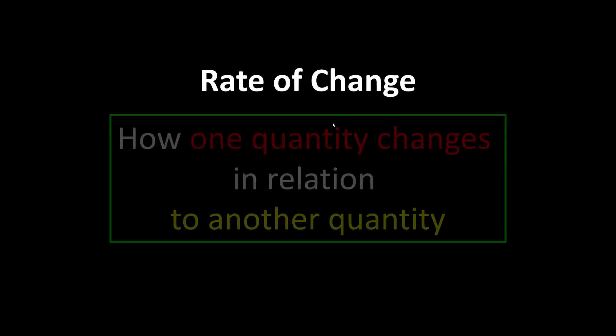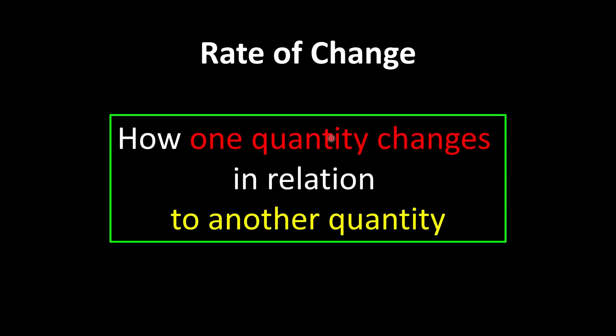Rate of change basically studies how one quantity changes in relation to another quantity. In short, it means how one quantity is affected by another quantity.